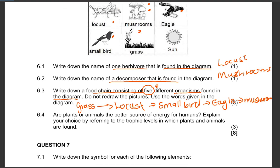Are plants or animals the better source of energy for humans? Explain your choice by referring to the trophic levels in which plants and animals are found. Explain your choice whether you're choosing plants or animals as the better source of energy for humans. You need to refer to the trophic levels in which plants and animals are found.